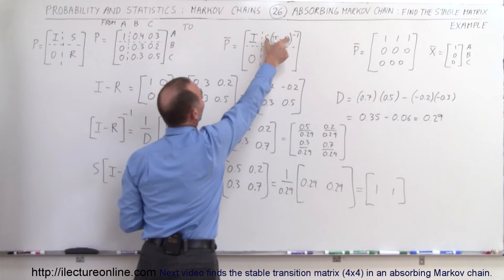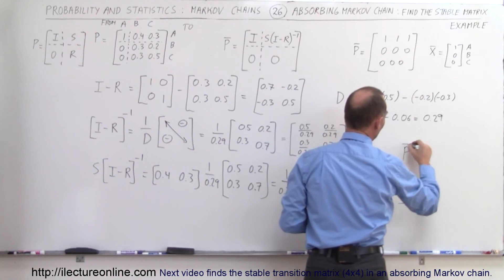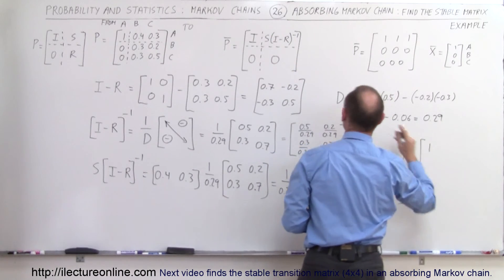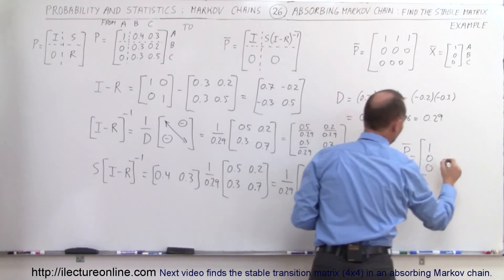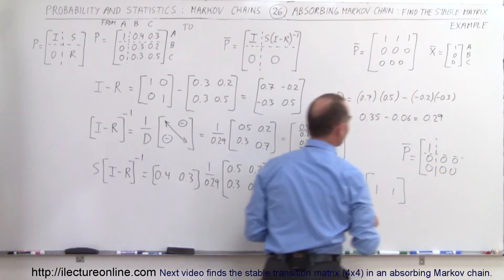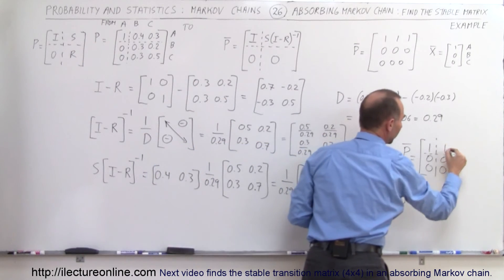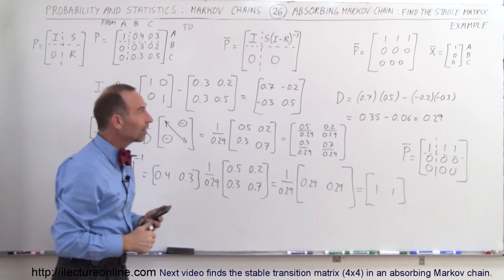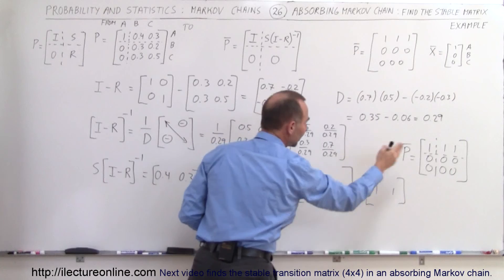This result goes in the upper-right corner of the stable P matrix. So the stable transition matrix has the identity matrix of 1 in the upper-left, zeros in the lower region, and the values 1 and 1 in the upper-right corner. We get exactly what we expected to find.